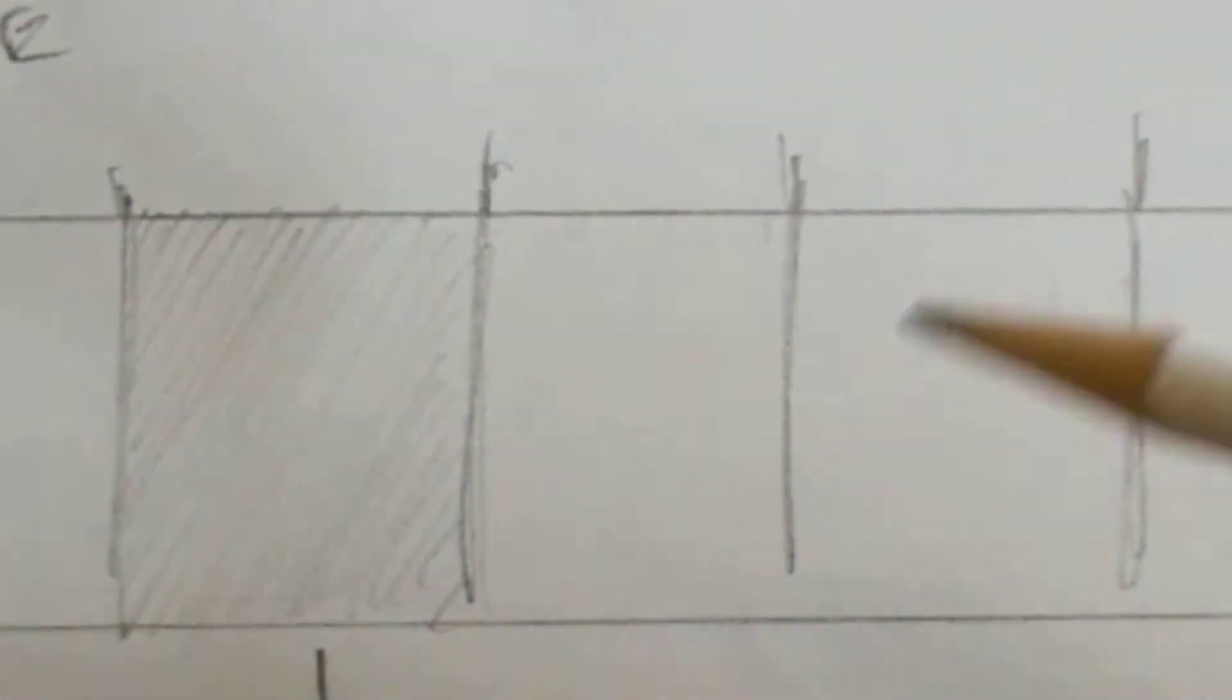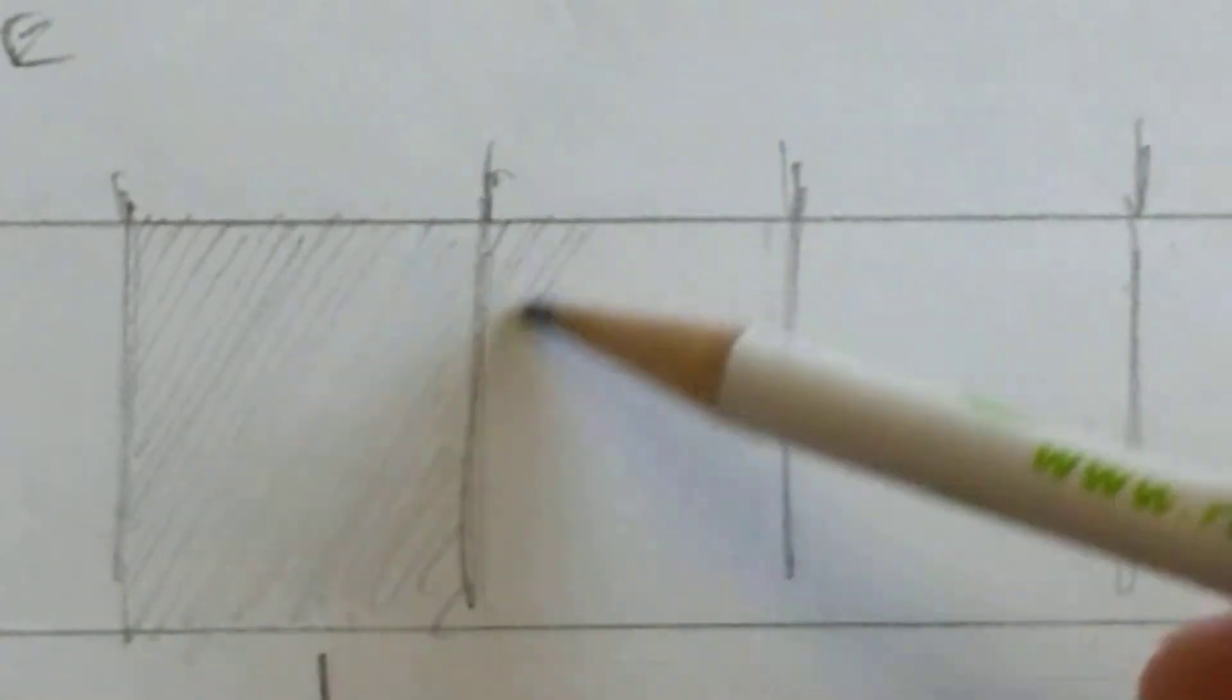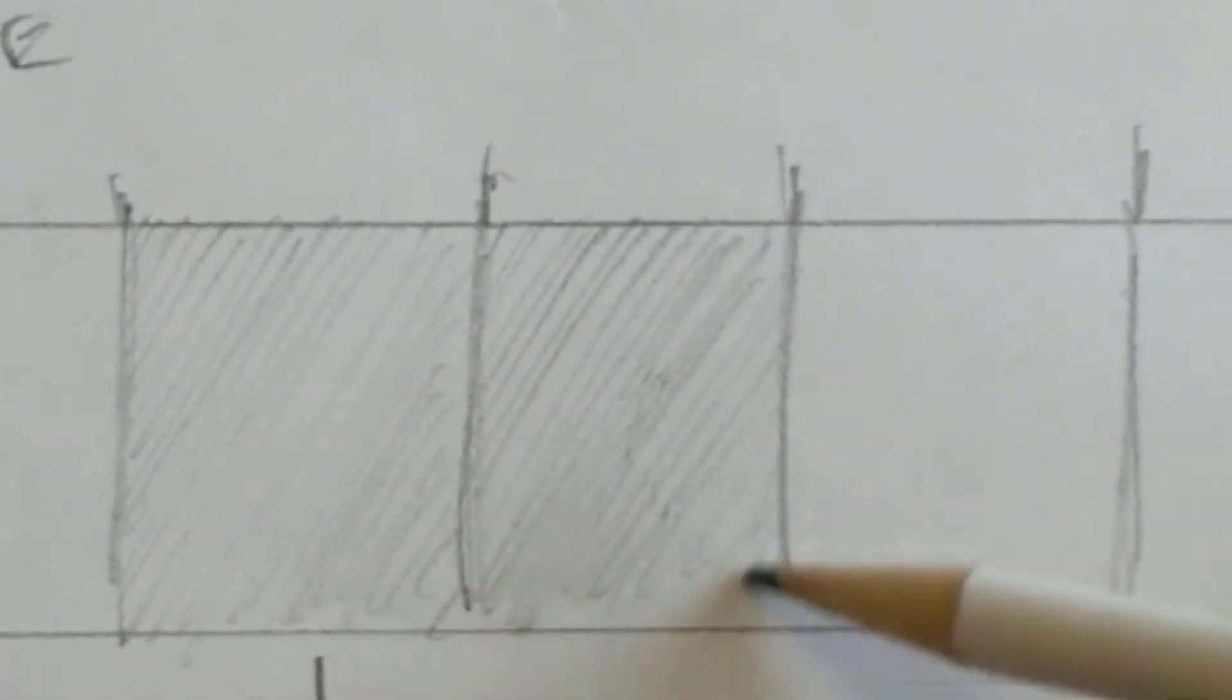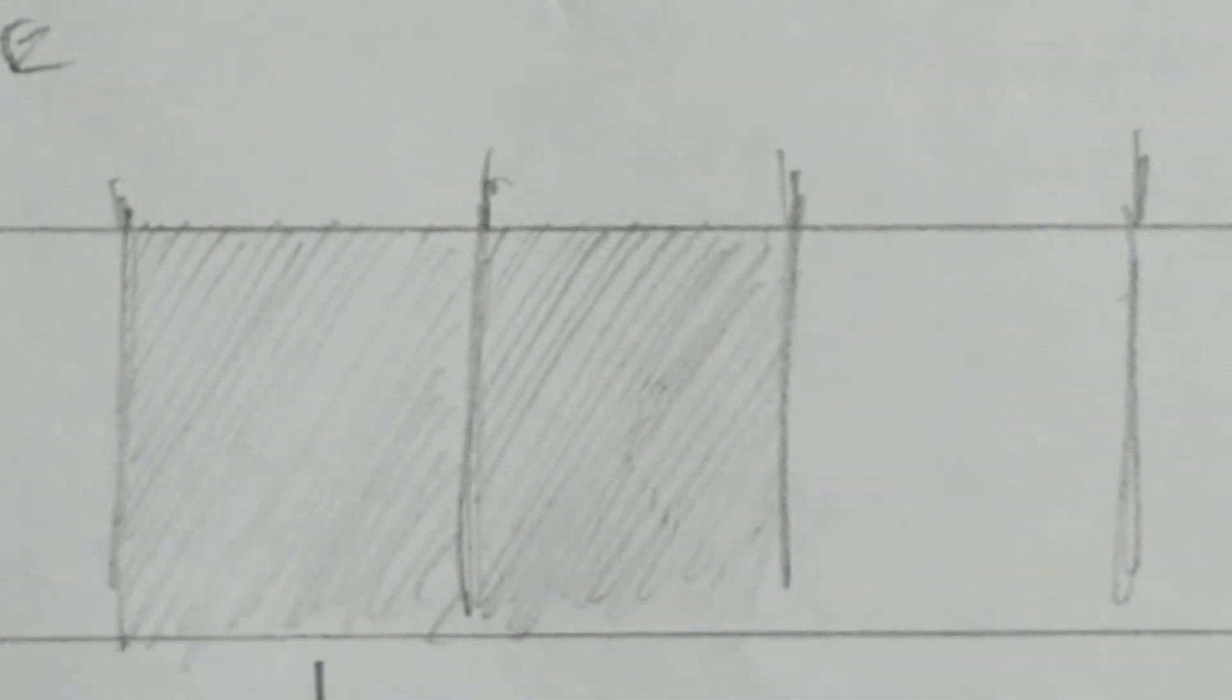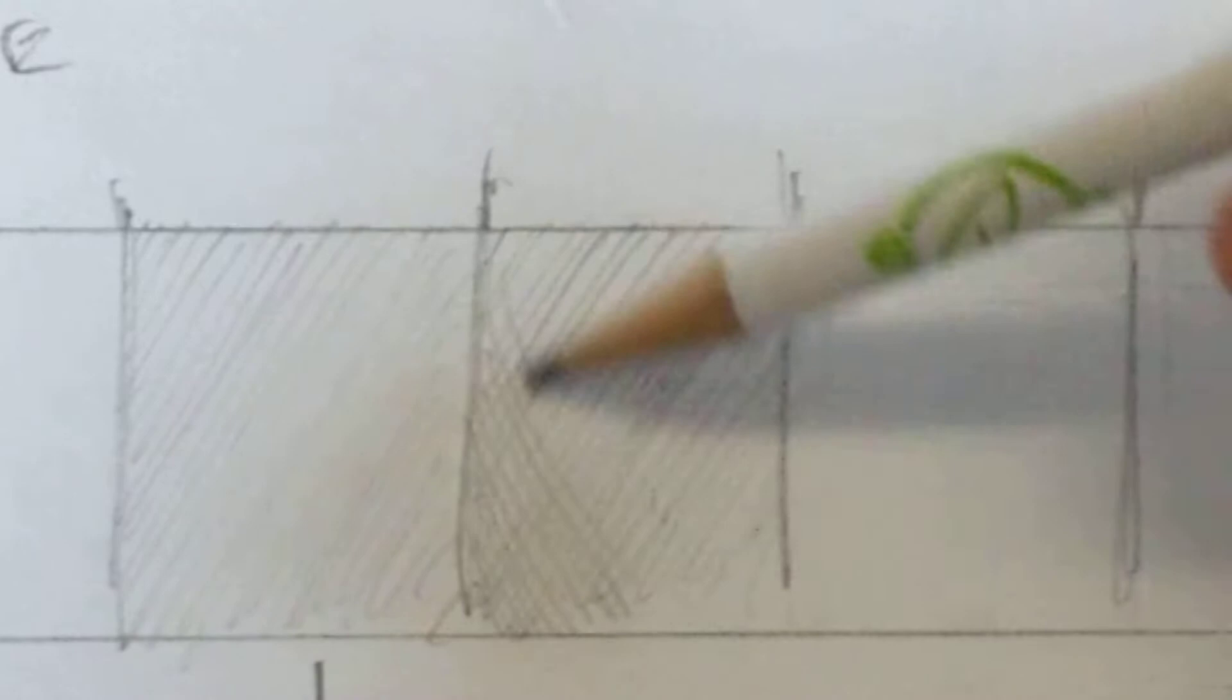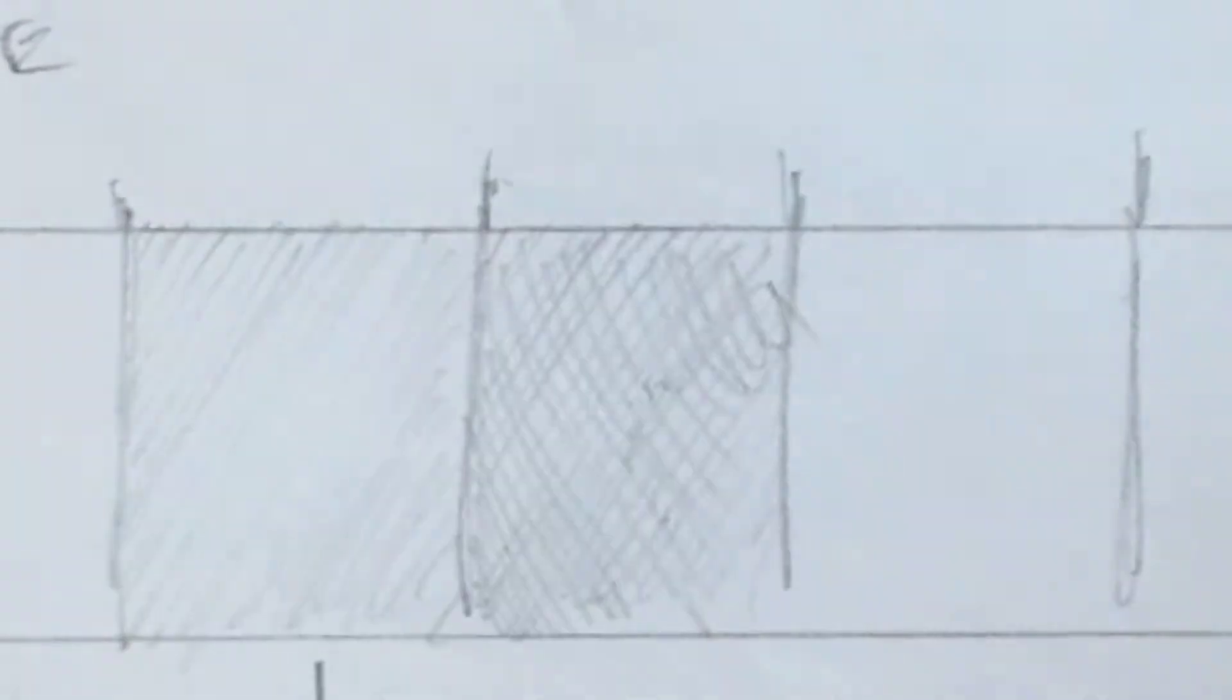Now the second set of lines for box number two, you do the same thing. You see if I do another set of lines, these guys are almost the same value or shade, but as soon as I do another set it gets twice as dark. It's very easy to control.